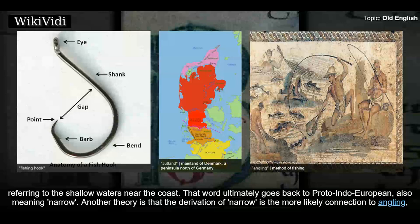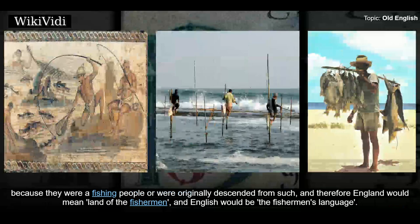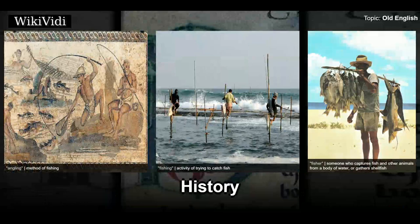That word ultimately goes back to Proto-Indo-European, also meaning narrow. Another theory is that the derivation of narrow is the more likely connection to angling, which itself stems from a Proto-Indo-European root meaning 'bend' or 'angle.' The semantic link is the fishing hook, which is curved or bent at an angle. In any case, the Angles may have been called such because they were a fishing people, and therefore England would mean 'land of the fisherman,' and English would be 'the fisherman's language.'